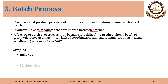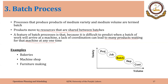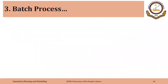Examples of batch processes are bakeries, machine shops, and furniture making. Perhaps the batch process is the most commonly used type of process in manufacturing, producing medium variety and medium volume.